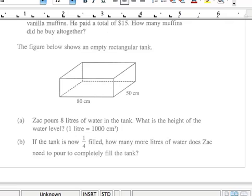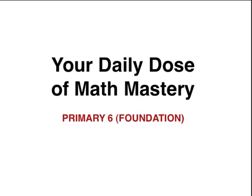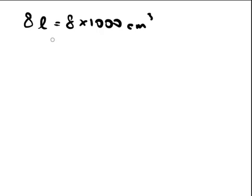Alright, so for part A, Zach pours 8 litres of water into the tank. So the first thing you need to understand is you need to find out what exactly is that in cm³. Now, you are given 1 litre equals to 1000 cm³. So let's just, first of all, write down what that means. So 8 litres is actually equals to 8 times 1000 cm³, which will give you 8000 cm³.